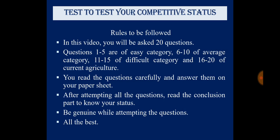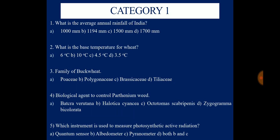All the best guys. This is Category 1. Question number 1: What is the average annual rainfall of India? Your options are 1000 mm, 1194 mm, 1500 mm, and 1700 mm. Put your answer on your paper sheet.